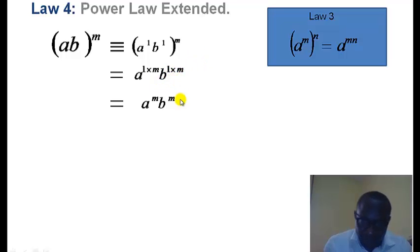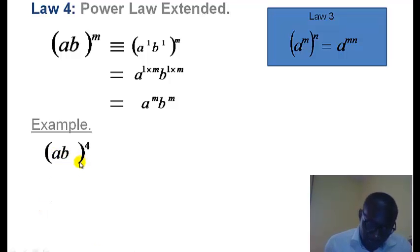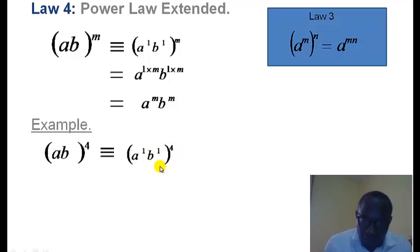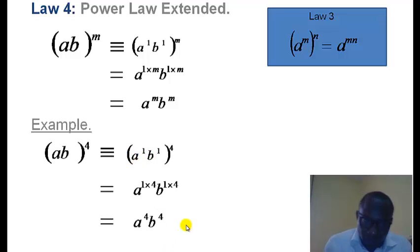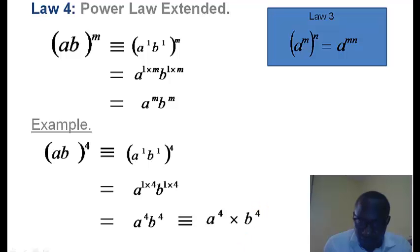Note that 1 multiplied by any number does not change the number. In our example, we look at (ab) raised to power 4. Remember, the base number in this case has two variables, a and b. This is equivalent to a raised to power 1 times b raised to power 1, all raised to power 4. This equals a raised to power 1 multiplied by 4 times b raised to power 1 multiplied by 4, giving a raised to power 4 times b raised to power 4. Whenever variables are put together without any mathematical operation between them, the default operation is multiplication.